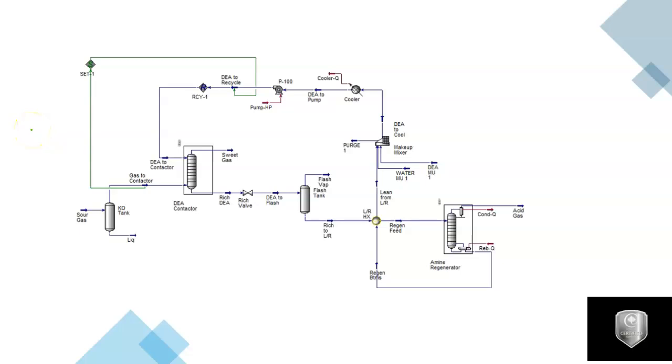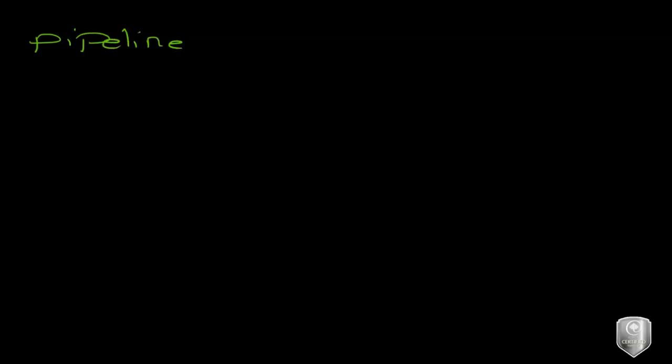In this video we are going to talk about the acid gas package in Aspen HYSYS. This will be the case we are going to work on in HYSYS. Before we begin, we need to know some information — first, the pipeline specifications. We are doing acid gas removal because we have pipeline specs or regulation specifications which you can't ignore, as they may affect the process flow.